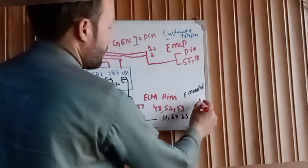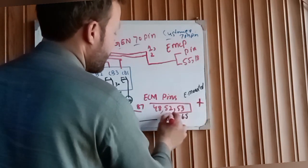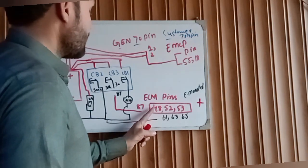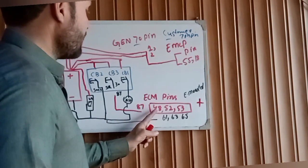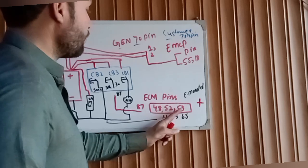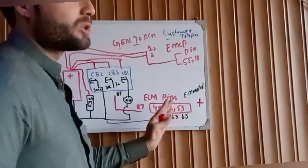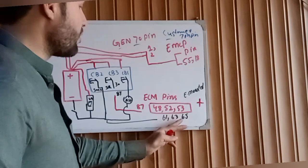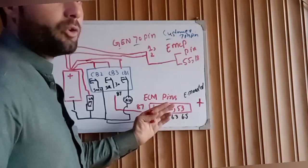From positive, these three pins: ECM pin 48, 52, 53. This is the positive input supply for the ECM. And pin 61, 63, 65, this is the negative input for the ECM to turning on.